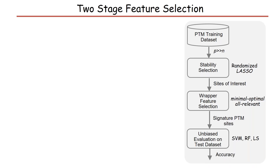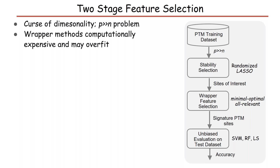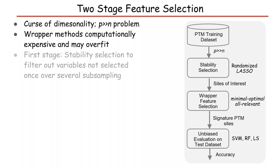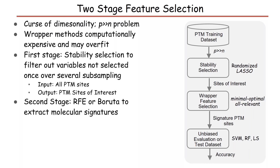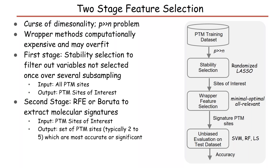We employ a two-stage feature selection procedure to better tackle the curse of dimensionality. In the first stage, we apply stability selection to filter out variables not selected even once over several subsamplings — the input is all PTM sites and the output is PTM sites of interest. In the second stage, we use recursive feature elimination or Boruta to extract molecular signatures, with the input being the PTM sites of interest from the previous step. The output is a set of PTM sites, typically 2 to 5, which are most accurate on the training sample or statistically significant. Finally, we perform validation of these signatures on the testing data.